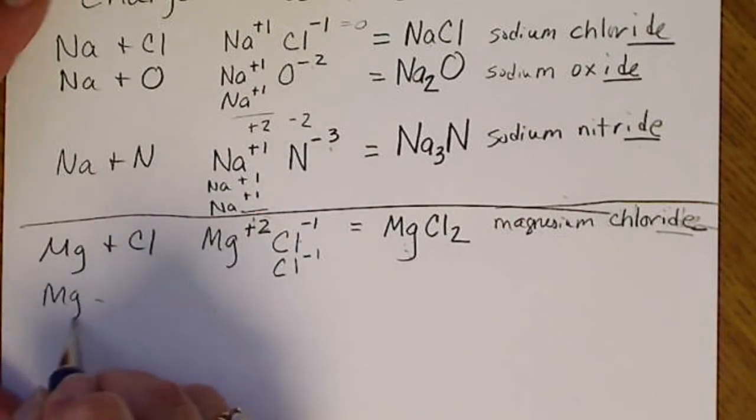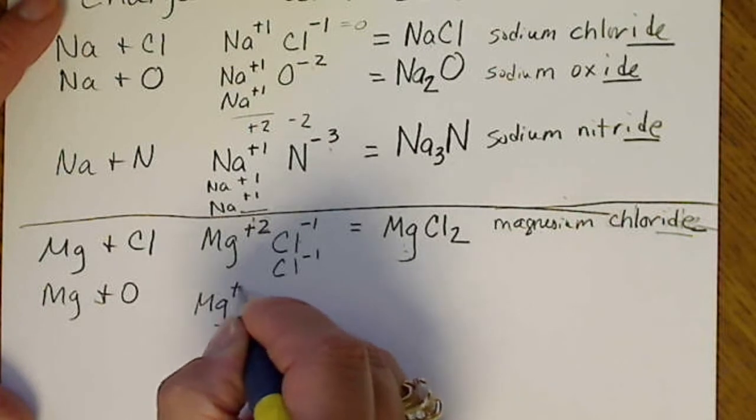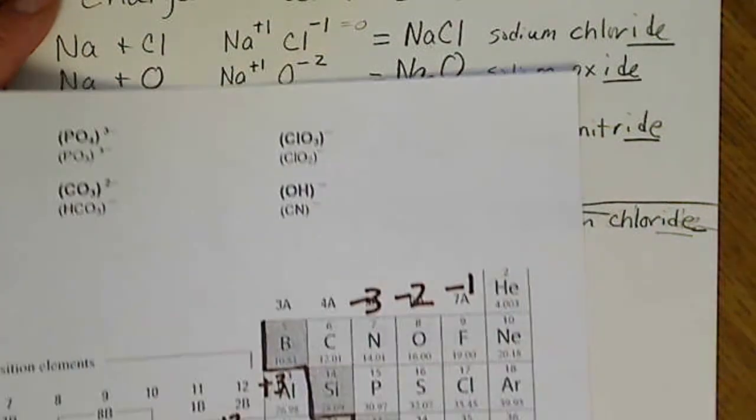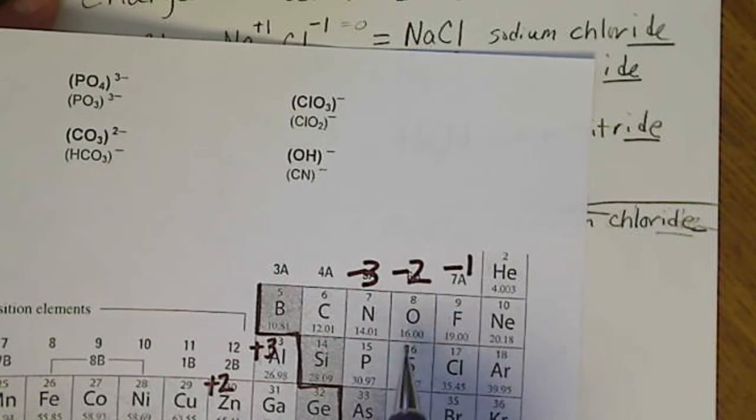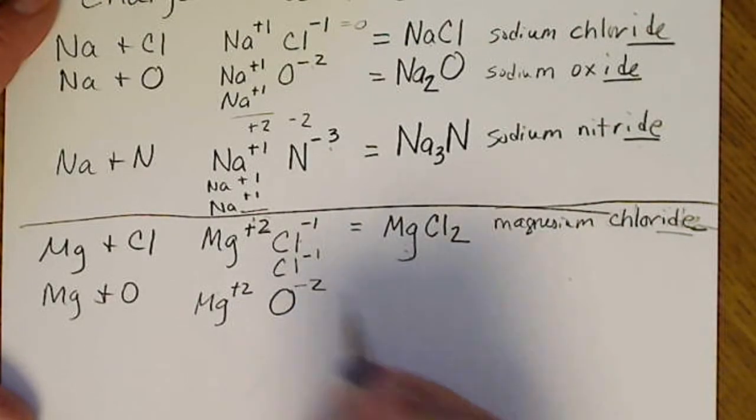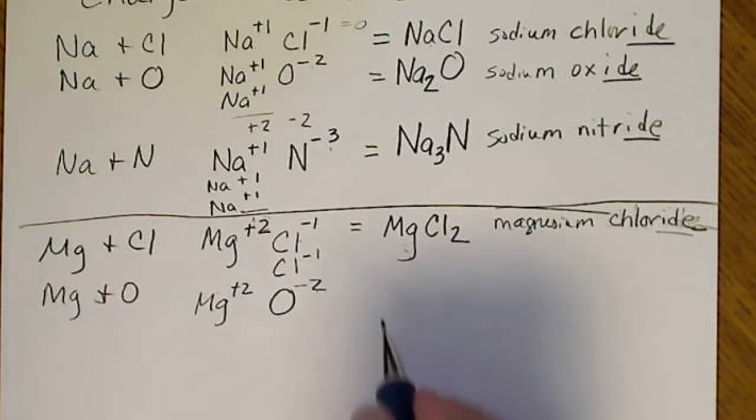So let's look at magnesium and an oxygen atom. Magnesium is always a plus 2. Now we're going to look at oxygen. Oxygen is in the minus 2 column. So we're going to put a minus 2 charge. And then we can see that a plus 2 and a minus 2 cancels to 0.